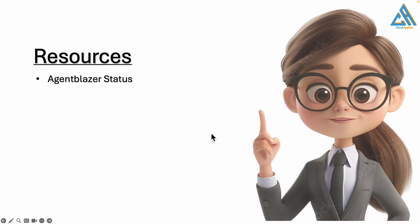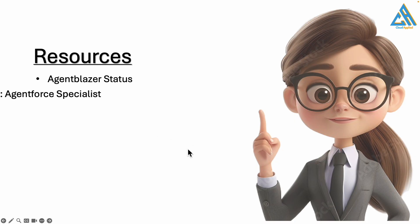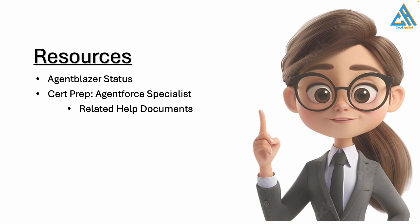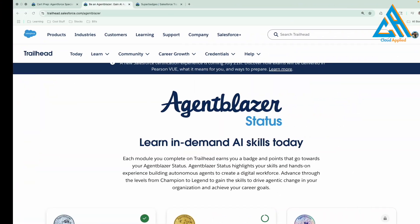A key resource is the Agentblazer status — I'll show you how to get there. If it's a lengthy route for you and you need to finish the certification soon, there is a certification prep Trailhead. Go through the Trailhead and also go through the help documents, because Trailheads show the application, but help documents will show you what each service is used for.